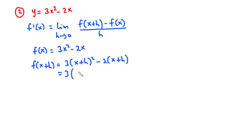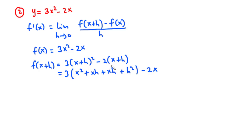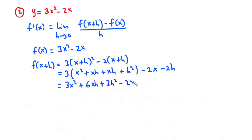Expanding the bracket: x times x is x squared, x times h is xh, h times x is xh, and h times h is h squared. So we have 3 times the quantity x squared plus 2xh plus h squared, minus 2x minus 2h. Distributing the 3 gives 3x squared plus 6xh plus 3h squared minus 2x minus 2h.